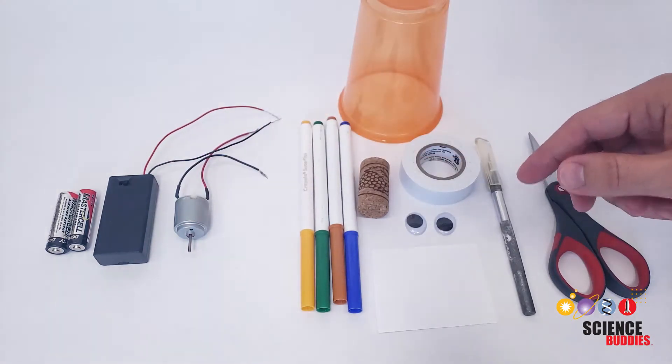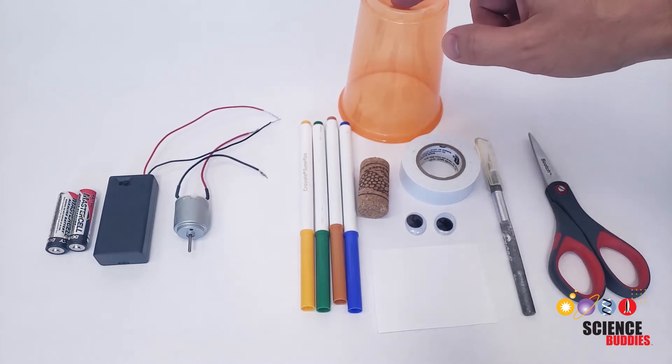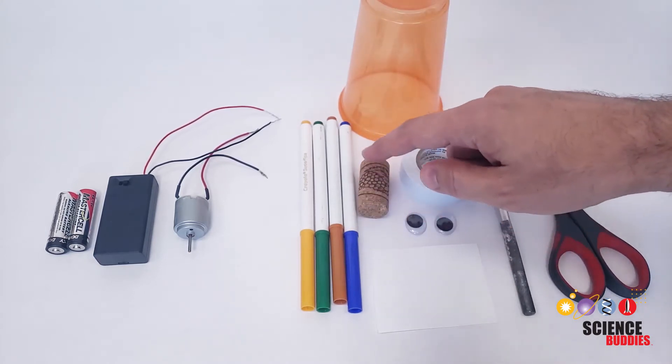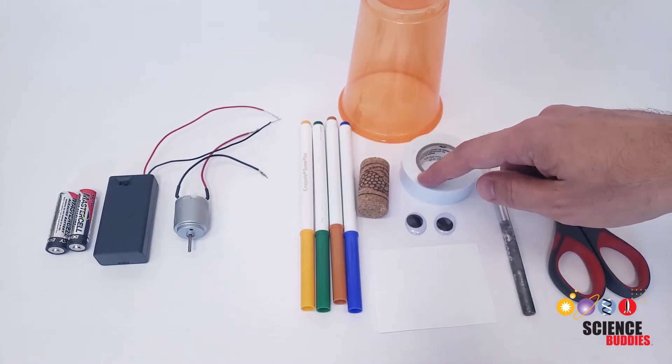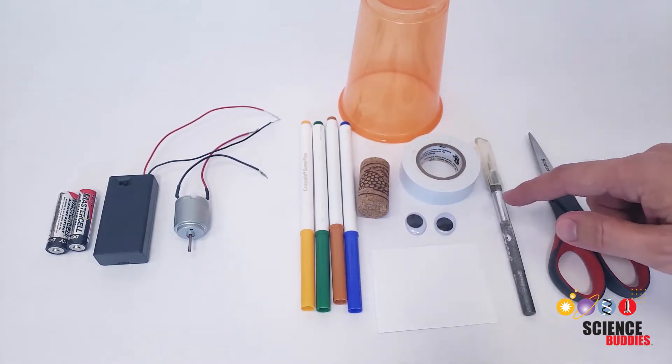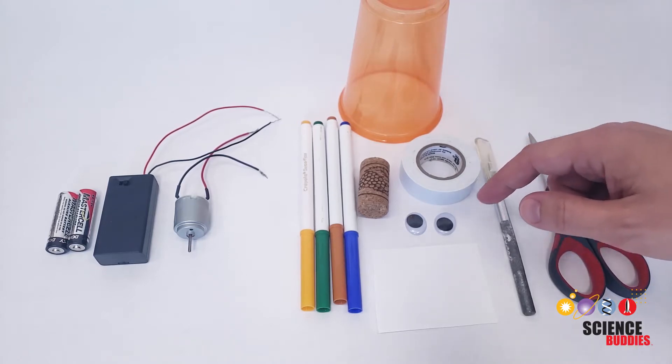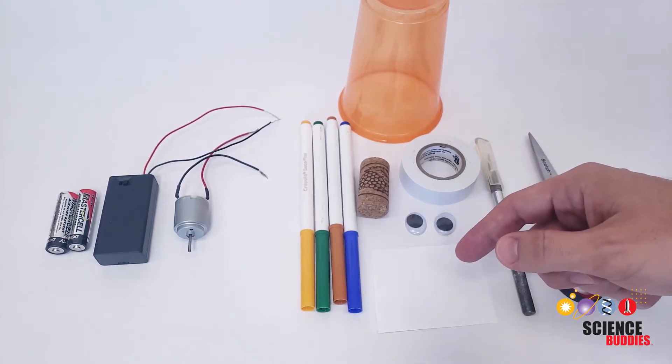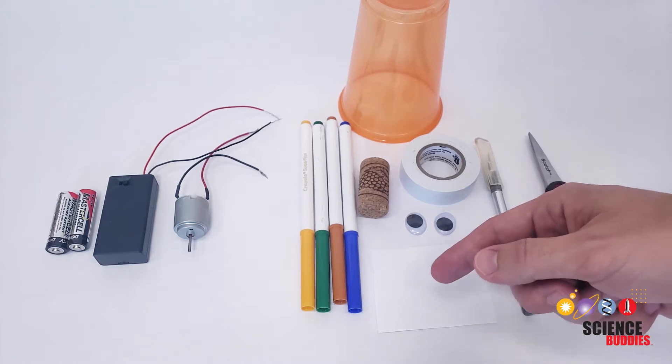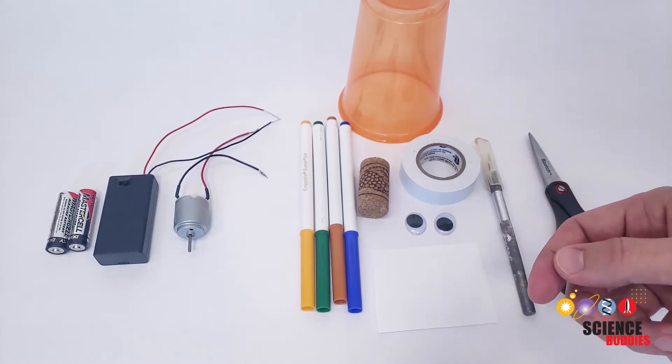You will also need an assortment of craft supplies, including a paper or plastic cup, four markers, a cork, some electrical tape, scissors, a hobby knife or other sharp object that you can use to poke some holes in the cup, and googly eyes and other craft supplies to decorate your Unicorn, like some paper if you would like to give it a horn and ears.